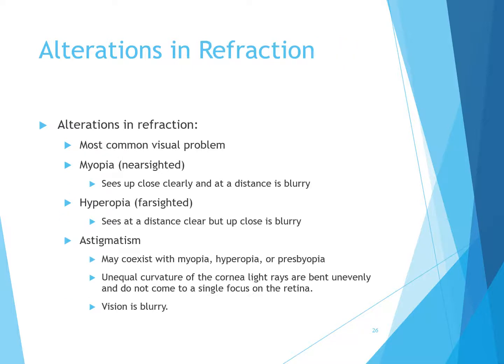Alterations in refraction are the most common visual problems. Myopia is nearsightedness — seeing up close clearly, but distant objects are blurry. Hyperopia is farsightedness — clear at a distance but blurry up close. Astigmatism can coexist with myopia, hyperopia, and presbyopia; it is caused by unequal curvature of the cornea so that light rays meet unevenly and do not come together in a single focus on the retina, resulting in slightly blurred vision.